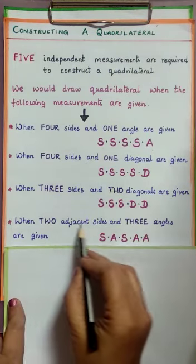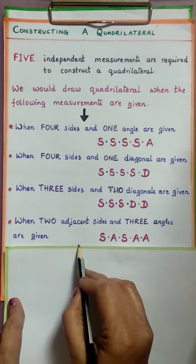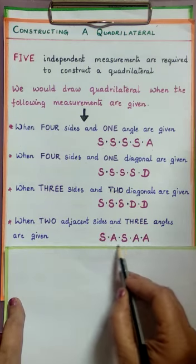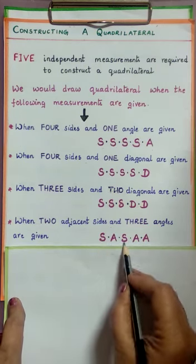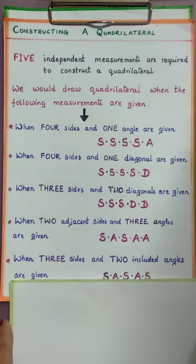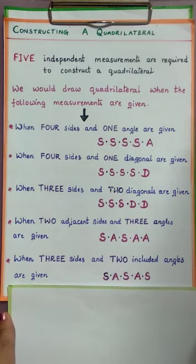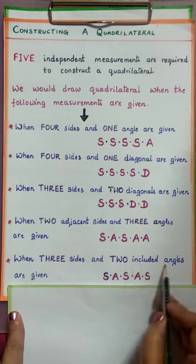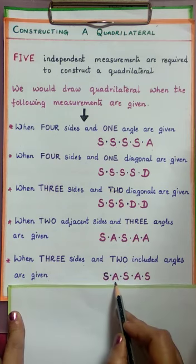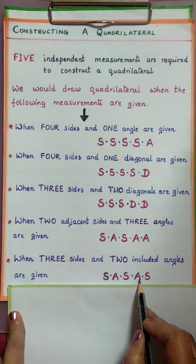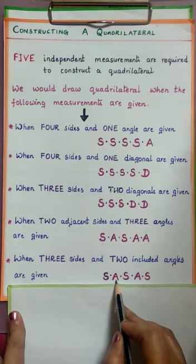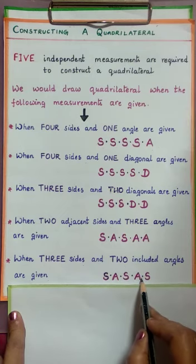The fourth case: when 2 adjacent sides and 3 angles are given — S, A, S, A, A — where the angle is included by the 2 sides. The fifth and last case: when 3 sides and 2 included angles are given — S, A, S, A, S — where each angle is included by the adjacent 2 sides.